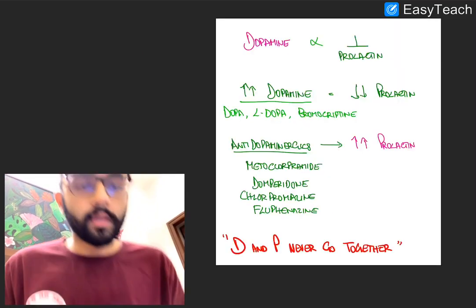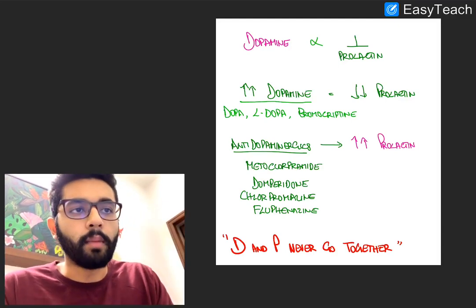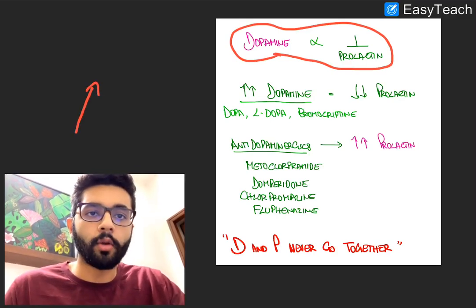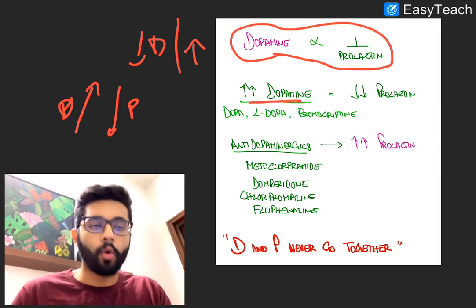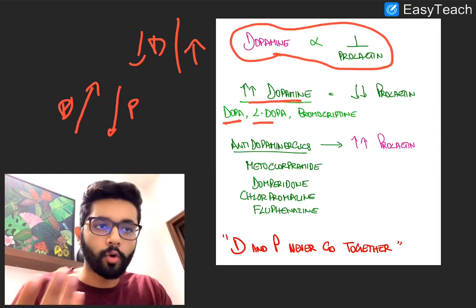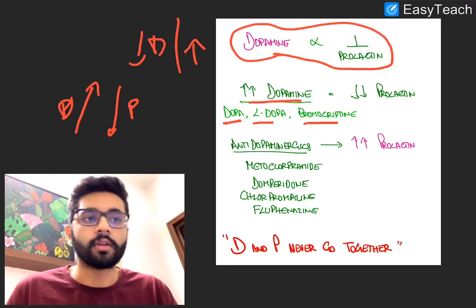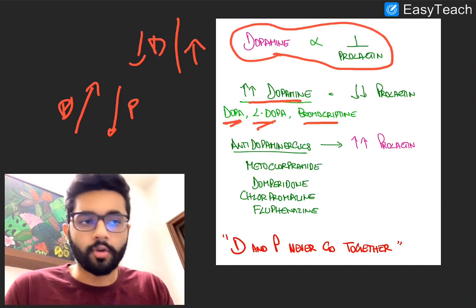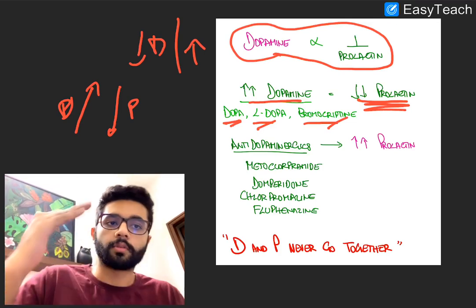Now the most important part — quizzed in many ways: dopamine and prolactin never come together. More dopamine means less prolactin; less dopamine means more prolactin. Any condition with more dopamine — for example, a person on levodopa, dopamine, or bromocriptine, which is an ergot alkaloid with dopamine-like action — will have a reduction in prolactin. So all three of these drugs reduce prolactin levels.